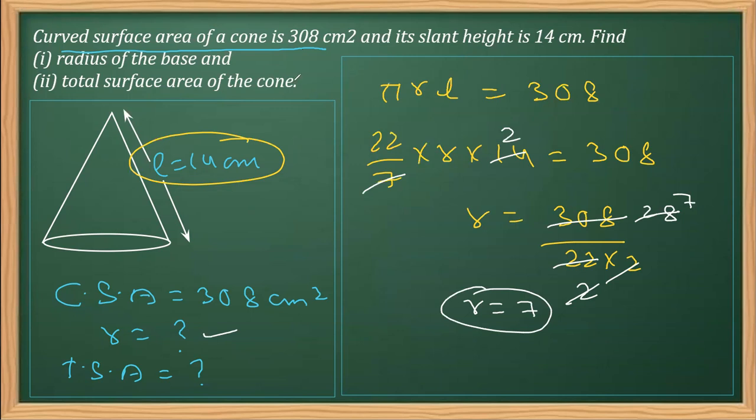Now we'll find the total surface area. For calculating the total surface area, the formula is TSA = πR(R + L). We'll replace π with 22/7, radius is 7, and L is 14. So TSA = (22/7) × 7 × (7 + 14).